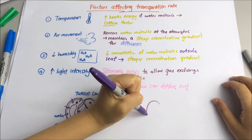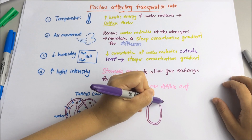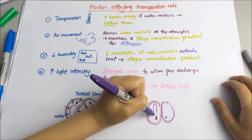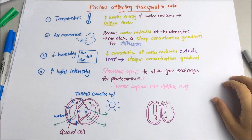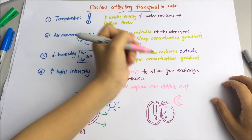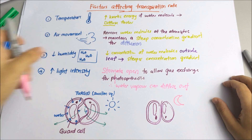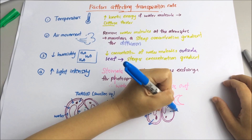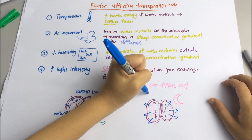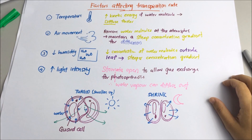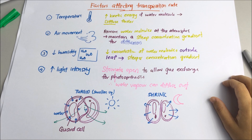In the night, in the dark, photosynthesis does not take place, so water will be lost. The guard cells will become flaccid, and their inner walls will move closer together, closing the pore.